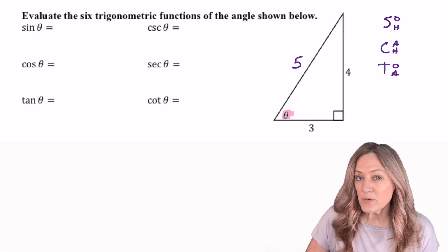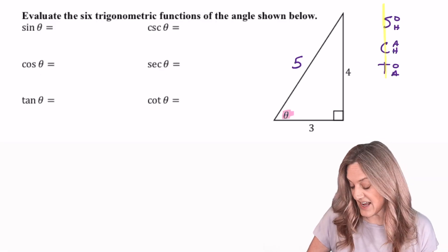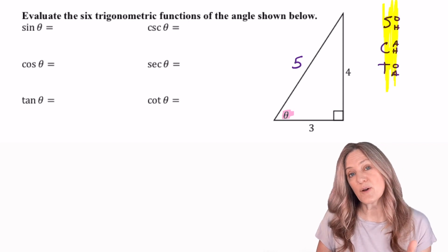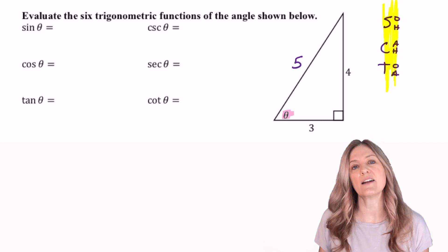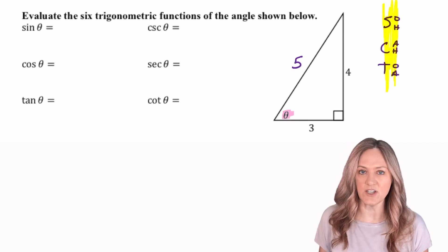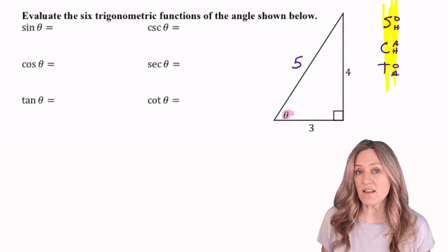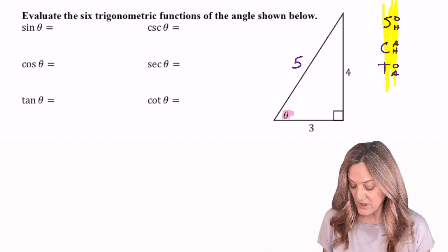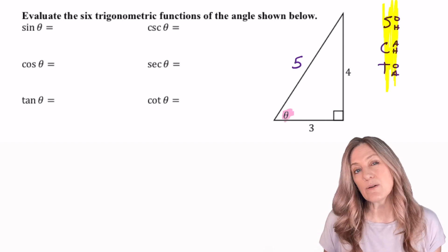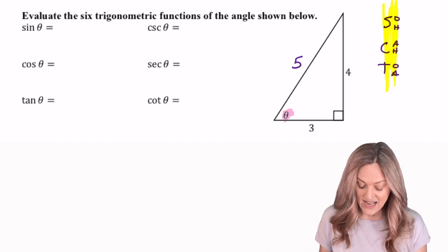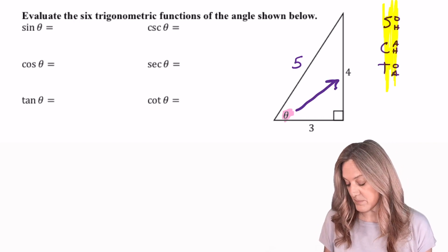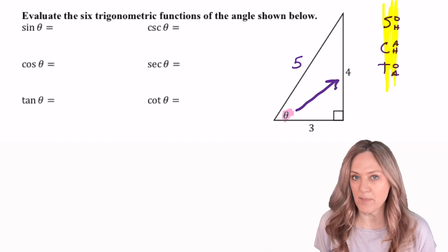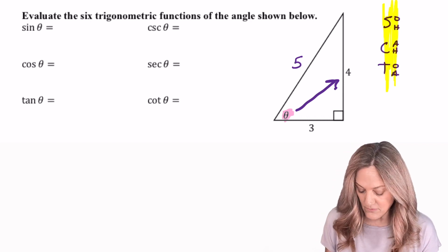Quick review. Remember SOH CAH TOA? Sine is the ratio of the side opposite to hypotenuse. Cosine is the ratio of the side adjacent to hypotenuse. And tangent is the side opposite divided by the side adjacent. Now they marked theta for us, so based on where theta is, we now need to find the value of sin θ. So sin θ, we look for the side opposite and compare it to the hypotenuse. So in this case, 4/5.